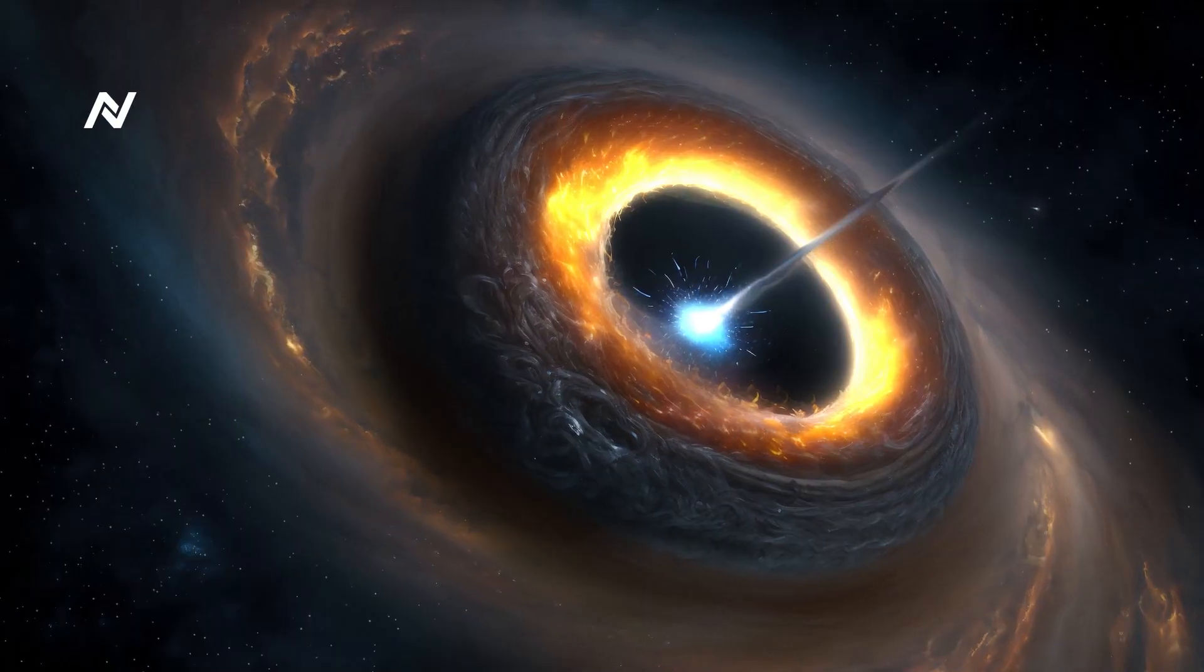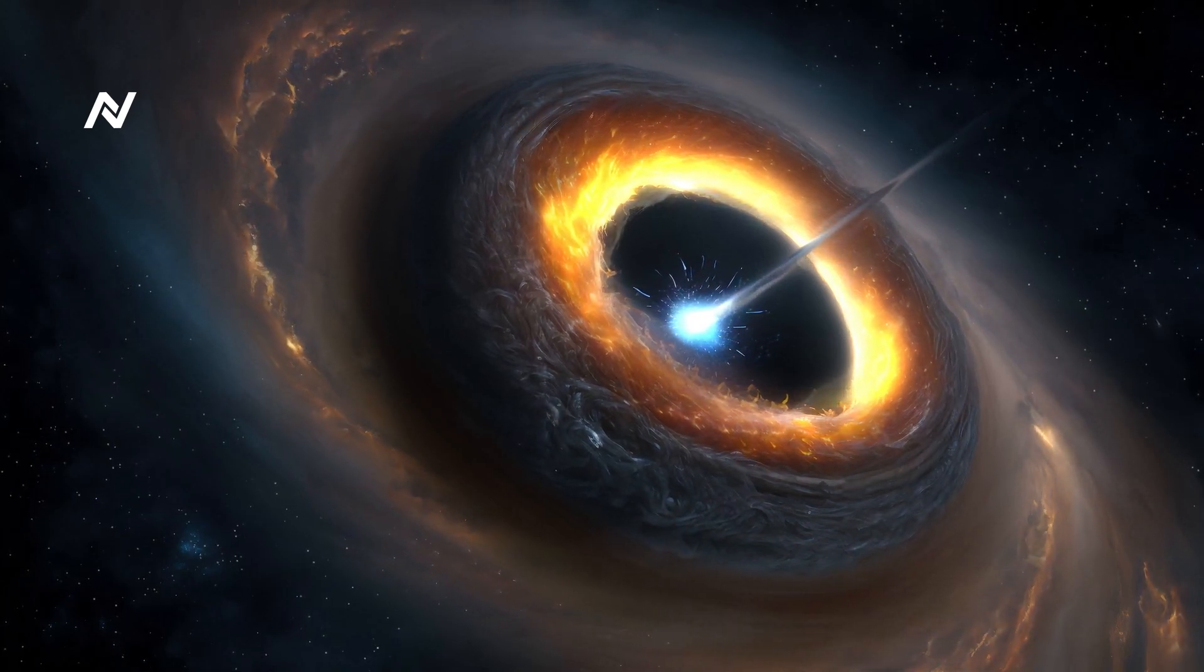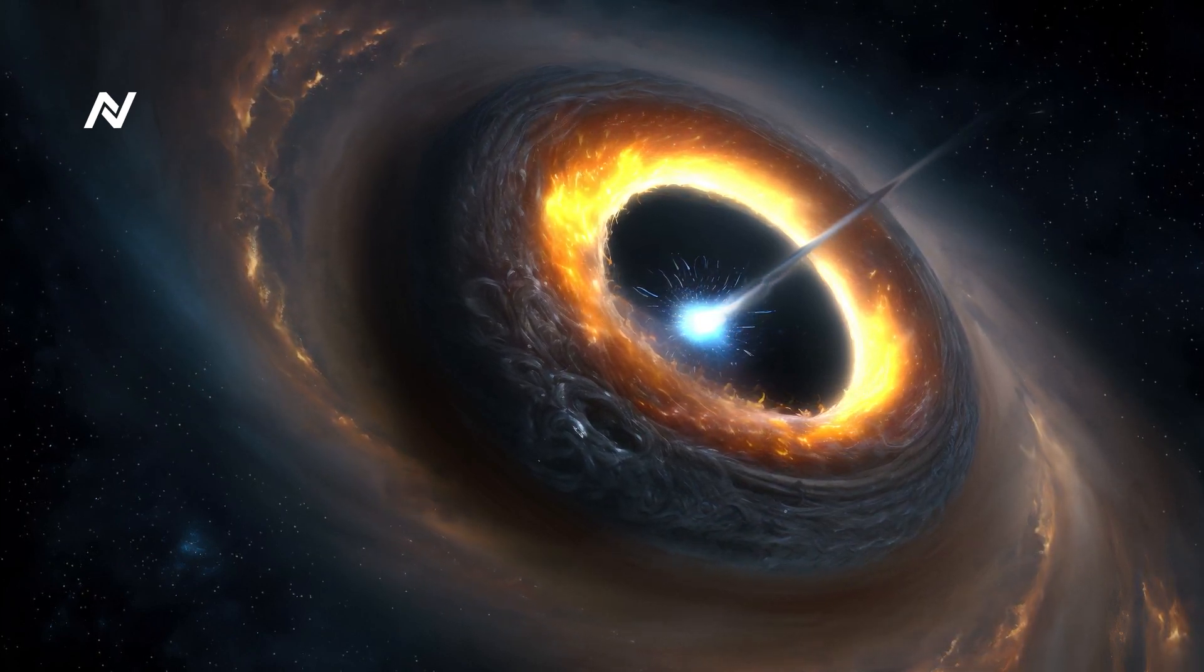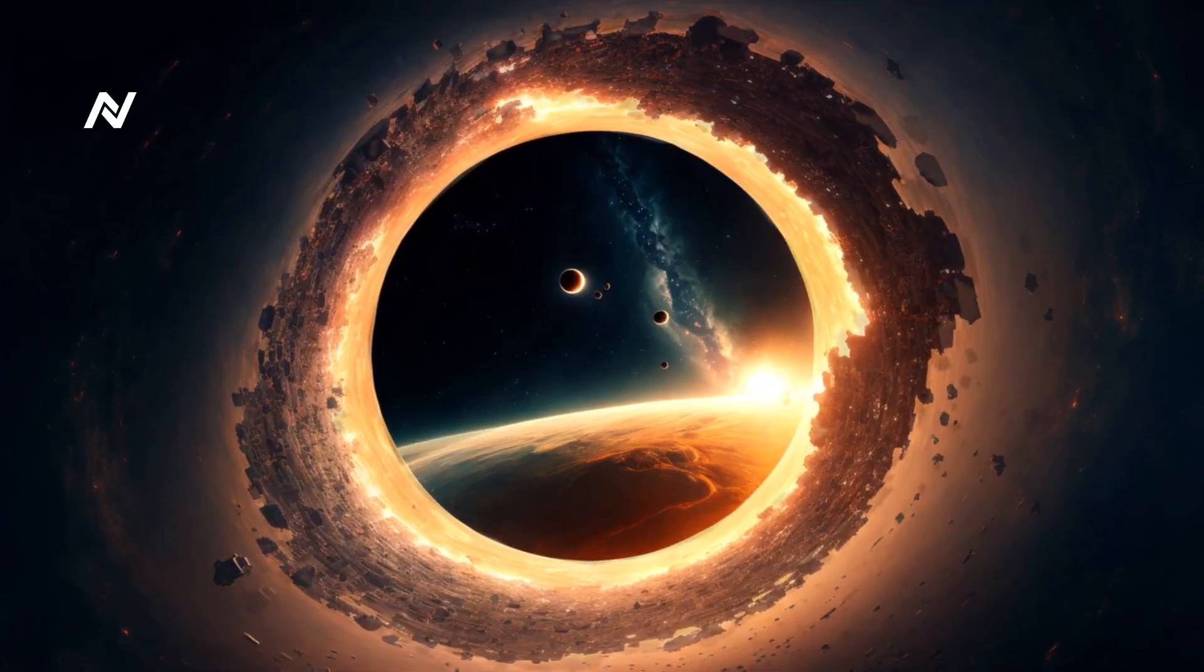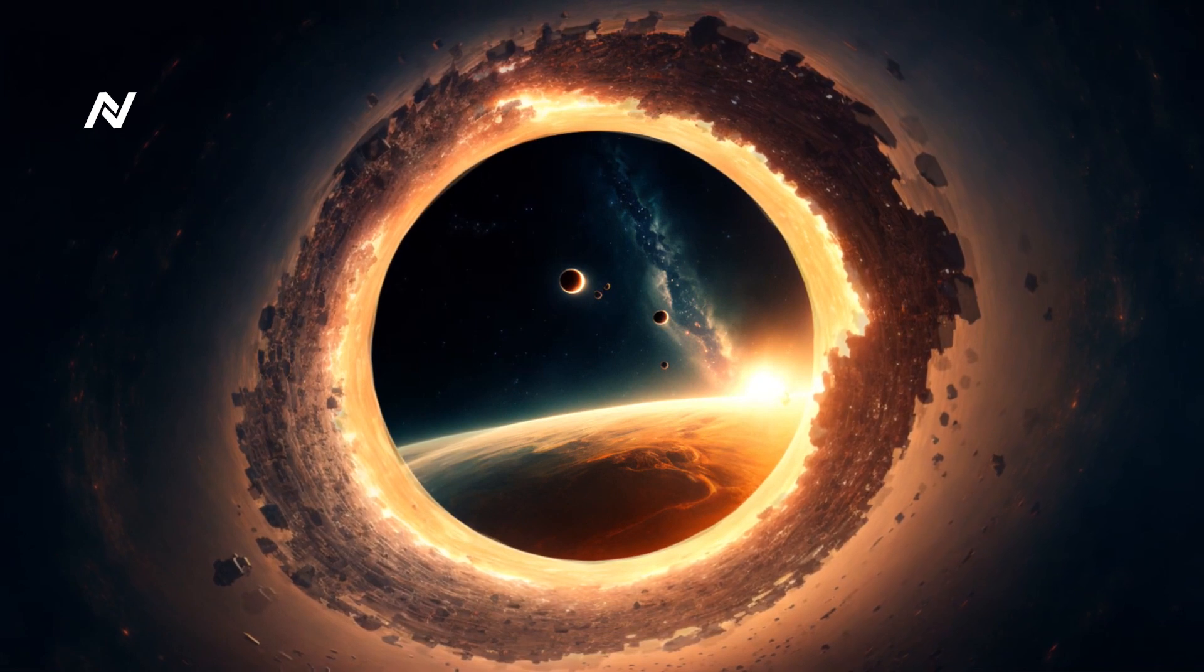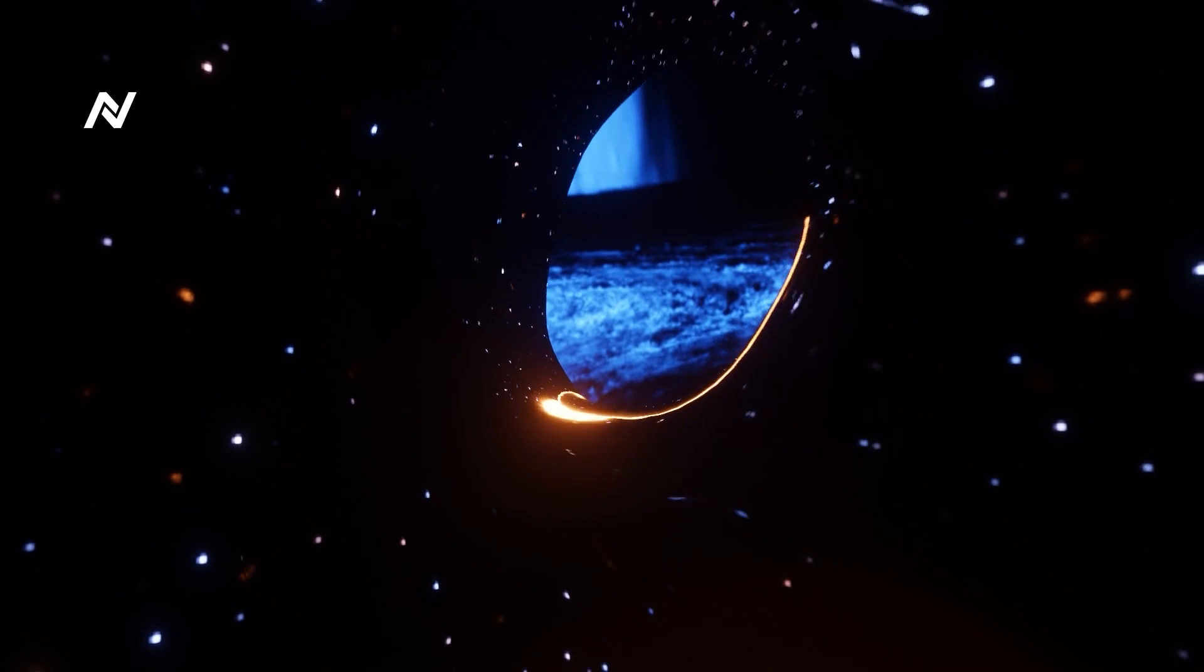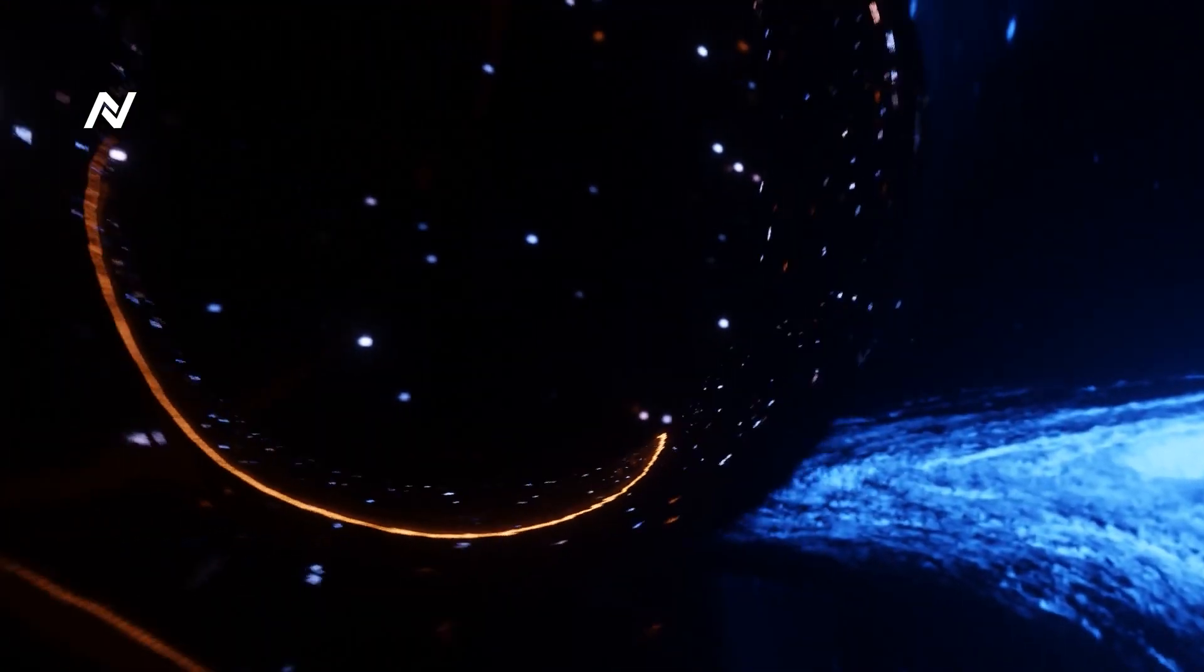The Hyperspeed Pulsar. In 2024, astronomers detected a pulsar traveling at an incredible speed of over 10 million kilometers per hour, earning it the nickname the Hyperspeed Pulsar. This neutron star, created from the remnants of a supernova, appears to have been shot out of its home galaxy like a bullet from a cosmic cannon. The pulsar's velocity is so extreme that it's expected to leave our galaxy entirely in a few million years.